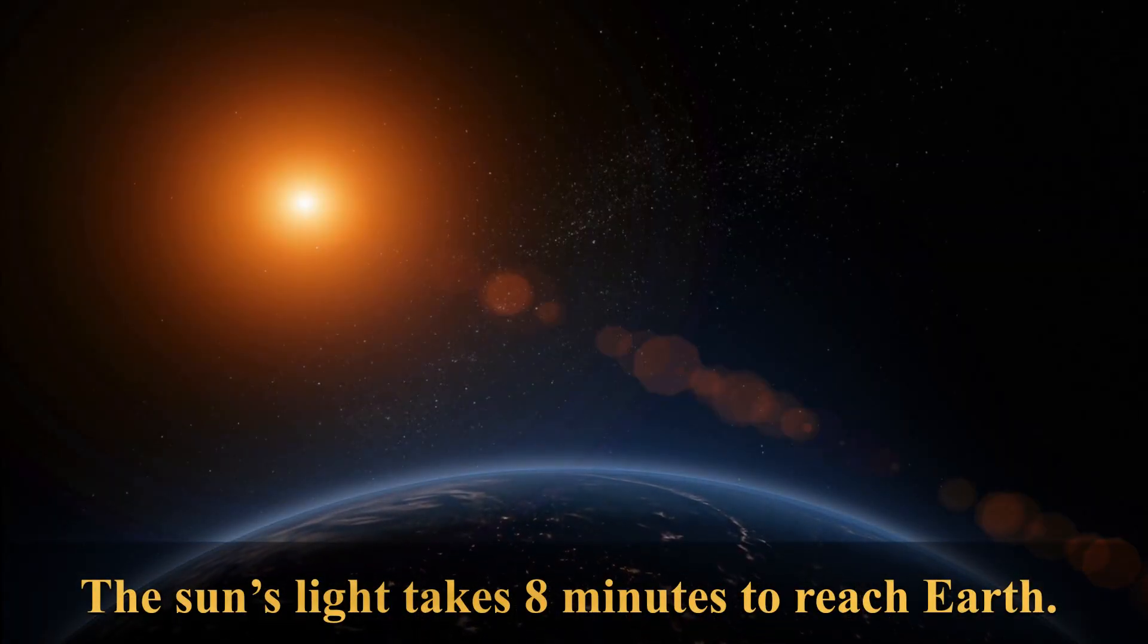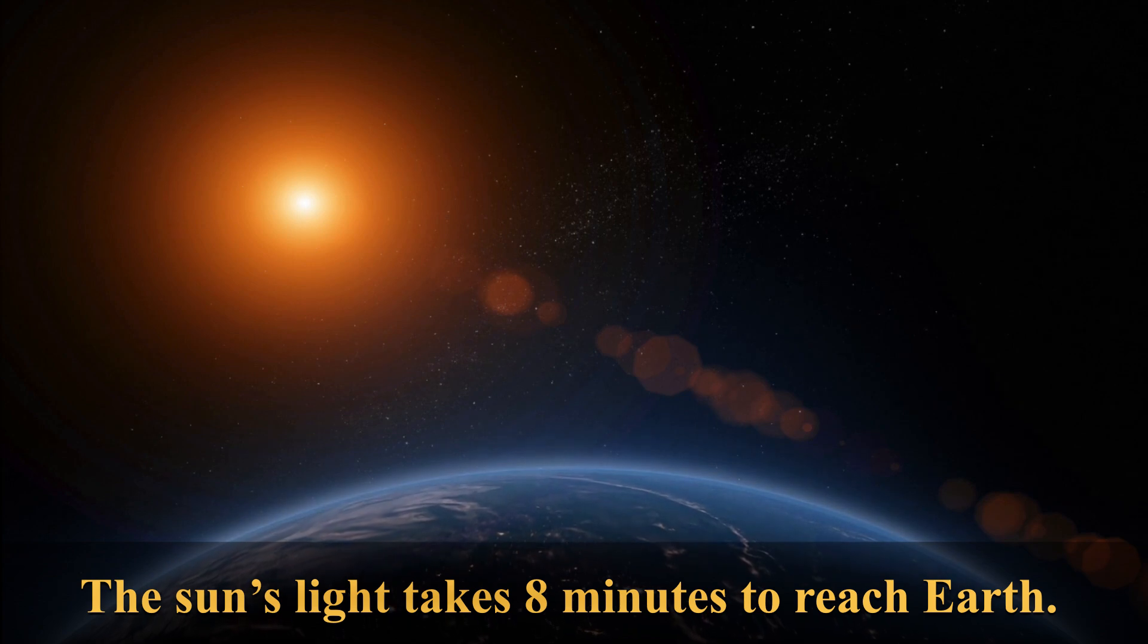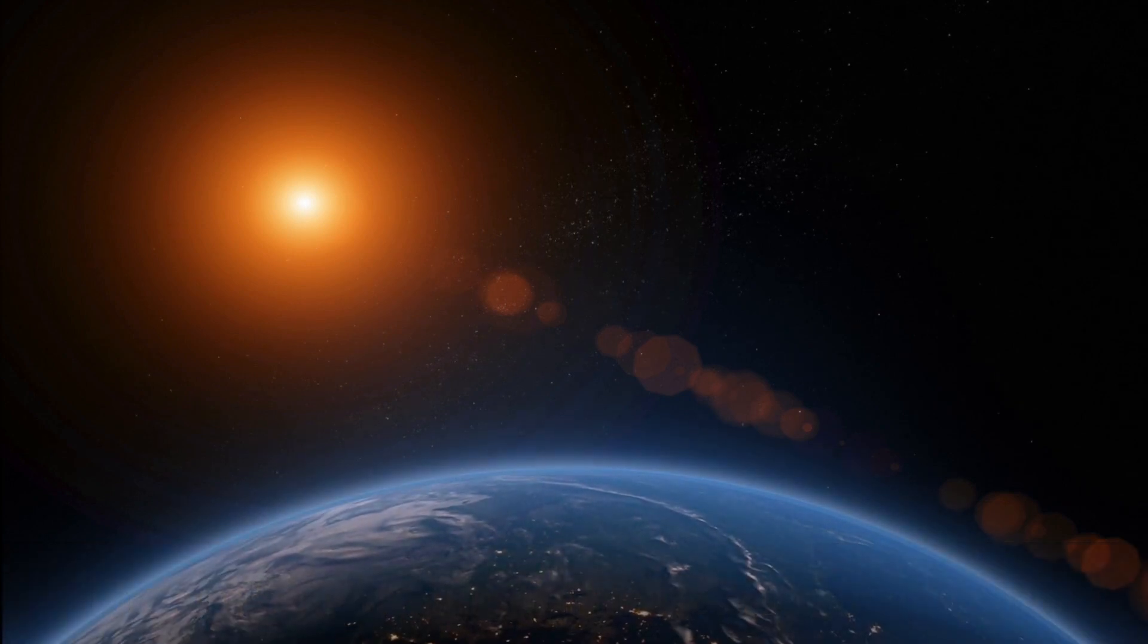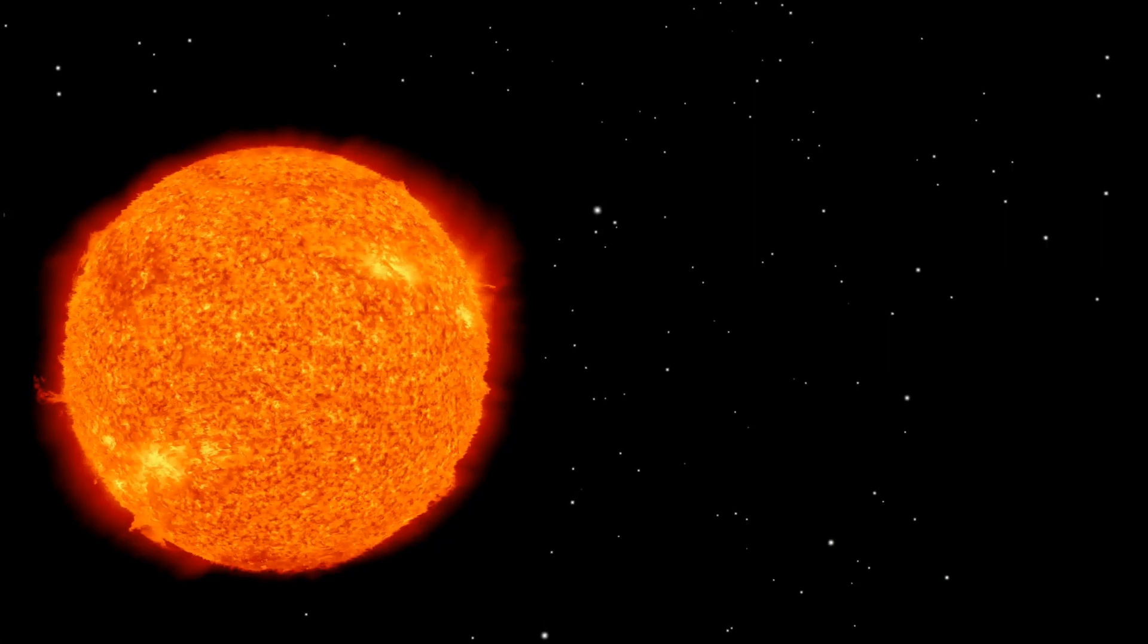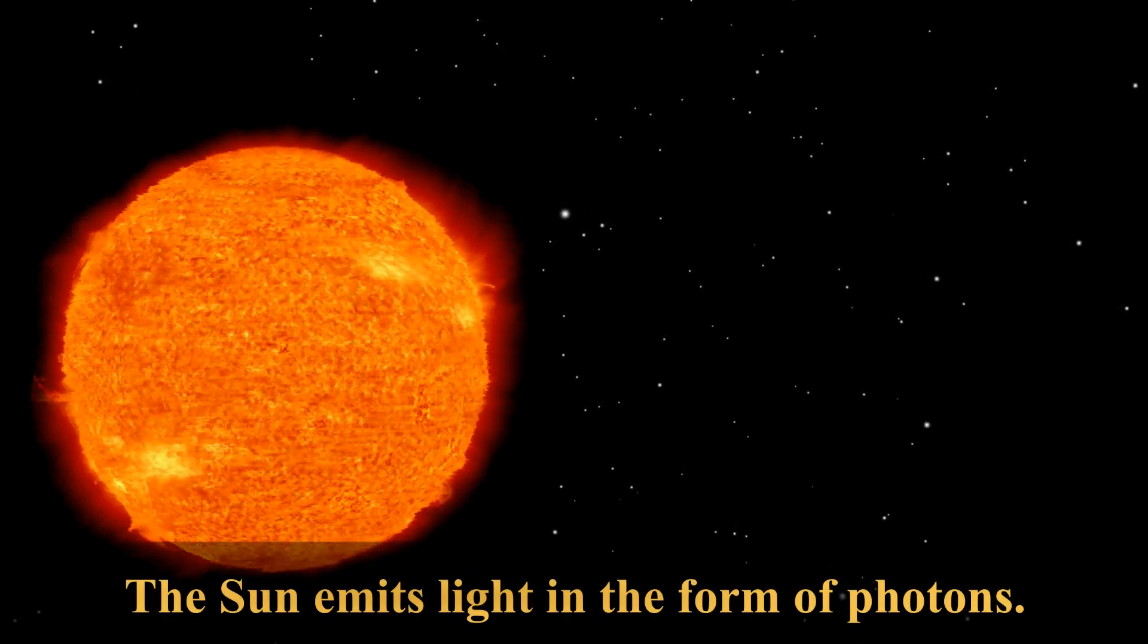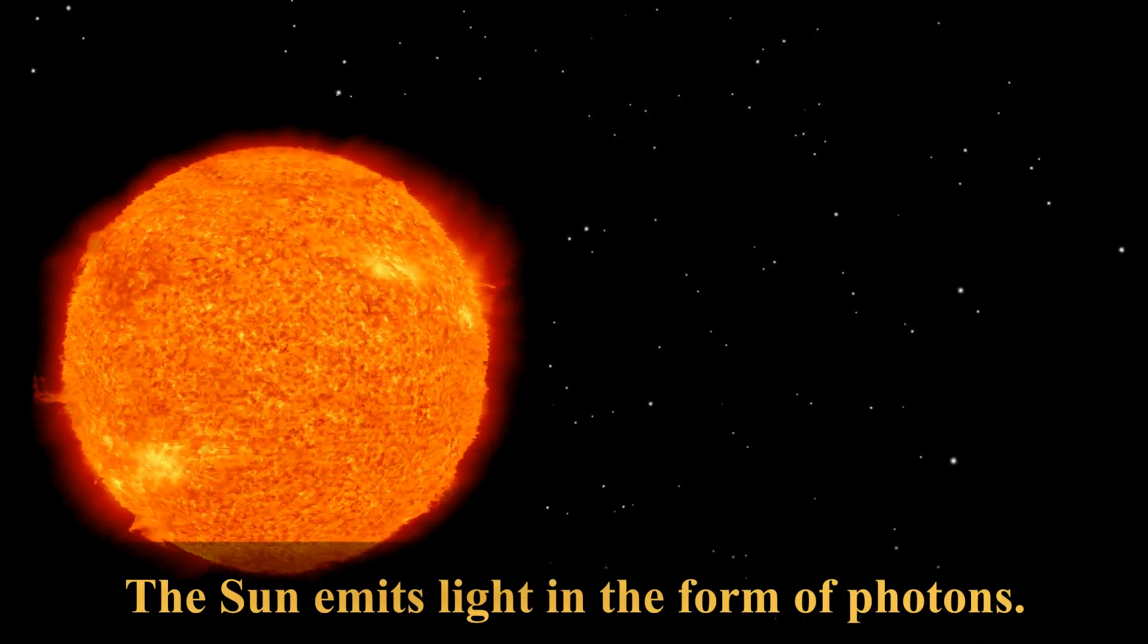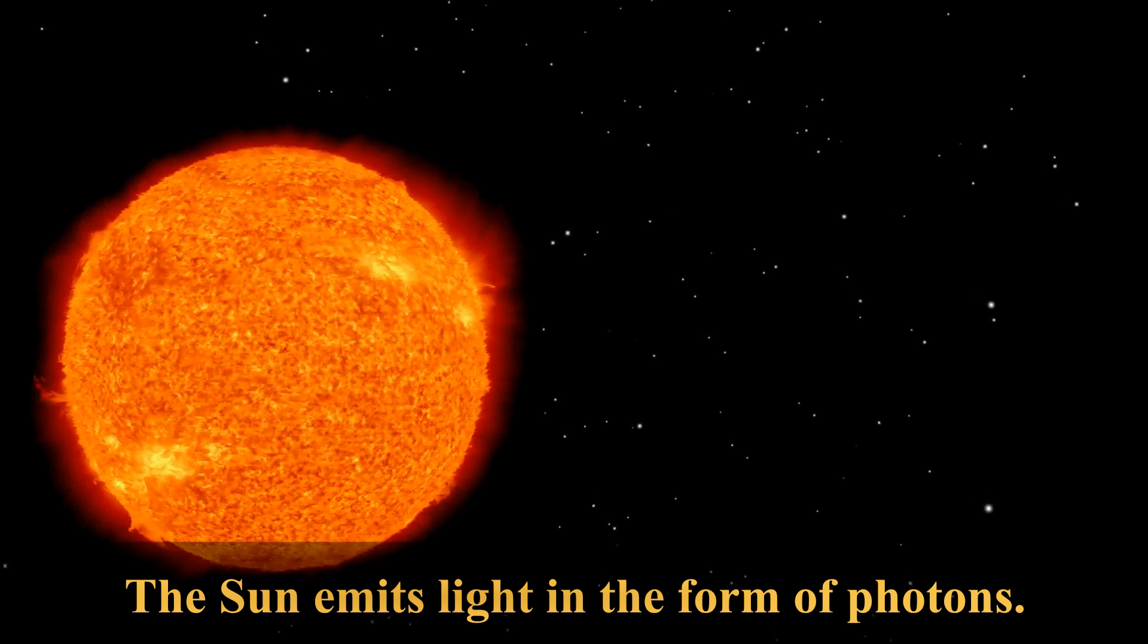The Sun's light takes 8 minutes to reach Earth. The Sun emits light in the form of photons. Photons are particles that carry electromagnetic energy.